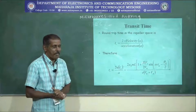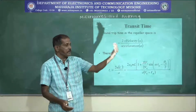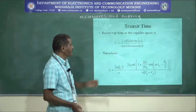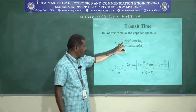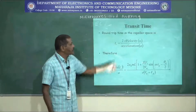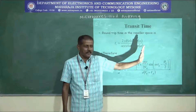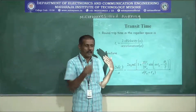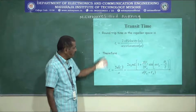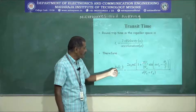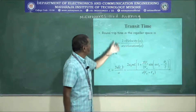One more parameter to calculate is the transit time — the time electrons travel out of the cavity toward the repeller space and return back. This is called the transit time, and from it we calculate the round trip time in the repeller space. The round trip time in the repeller space is calculated by 2 × velocity / acceleration. The factor 2 is used because the electrons have to move forward and return — a two-way motion. This transit time is calculated from the equation 2u(Tg)/A.